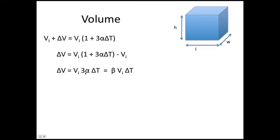For metals, alpha is presented as a linear expansion coefficient. If given a linear expansion coefficient, you can find the volume change using delta V = 3α Vi delta T. For liquids, a linear expansion coefficient doesn't make sense, so we use a volume expansion coefficient beta, where beta equals 3 alpha.